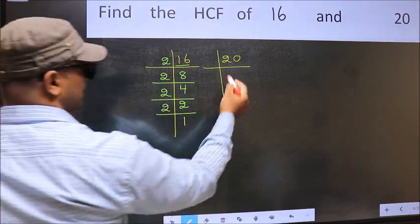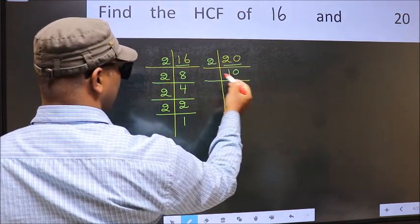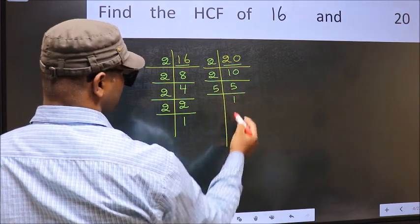Now the other number 20. 20 is 2 times 10. 10 is 2 times 5. 5 is a prime number, so 5 times 1 is 5.